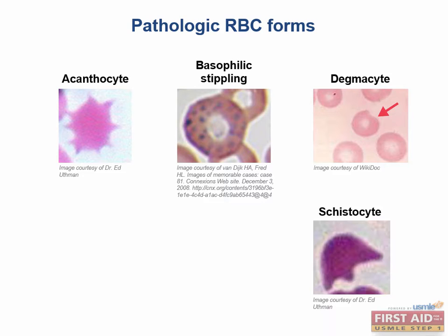This cell is a schistocyte. Schistocytes are also called helmet cells because of their shape, and they are fragmented parts of RBCs that form in microangiopathic diseases, like DIC, HUS, TTP, and traumatic hemolysis, like you might see with a mechanical valve.